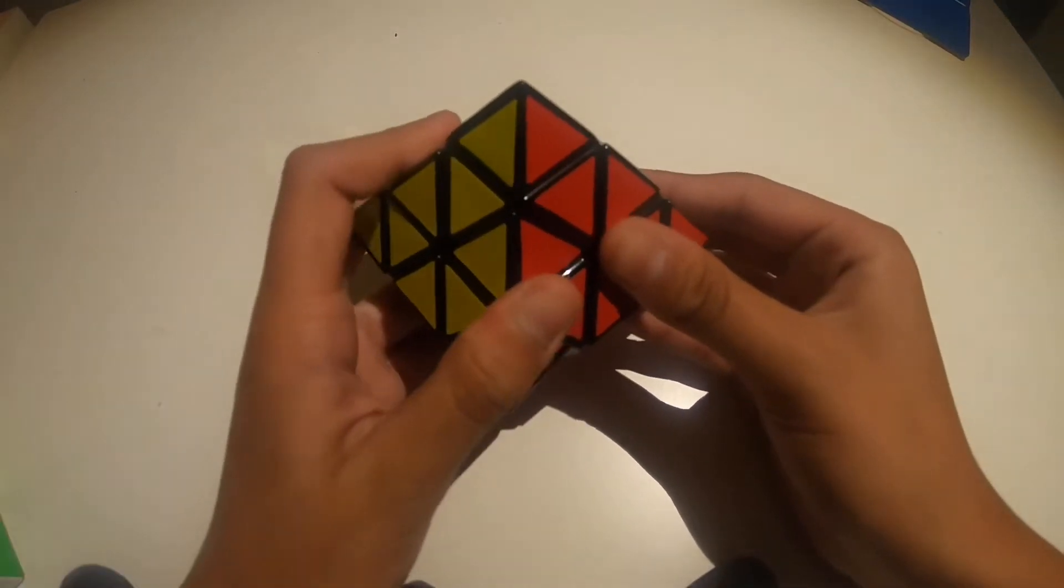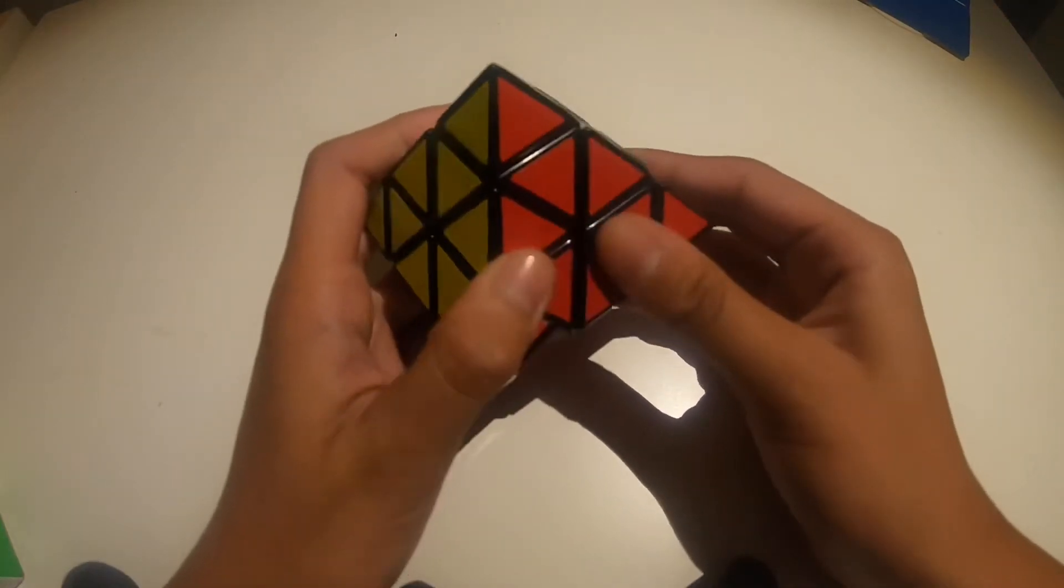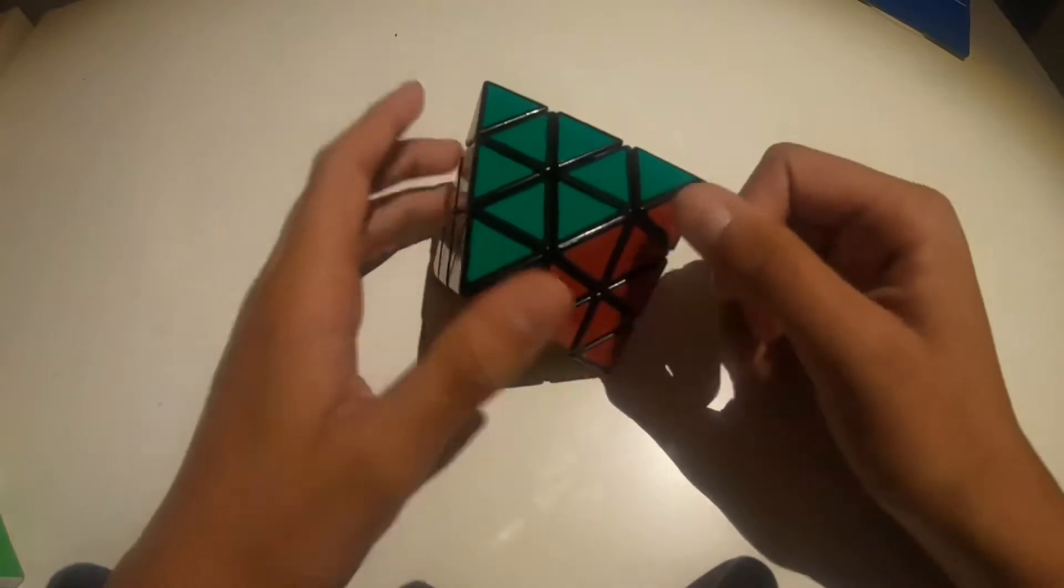So this is the Dino Octahedron. This is actually one of the puzzles I got from Ryan Driscoll at Altona.